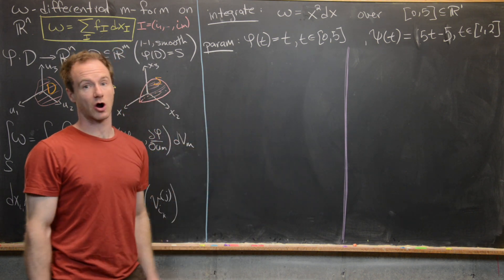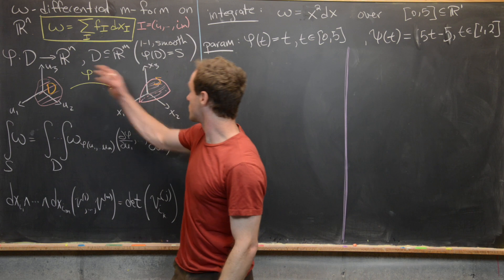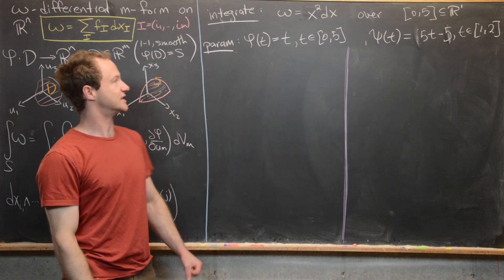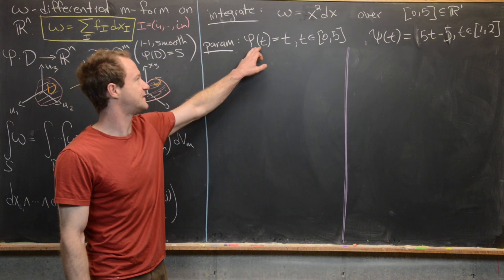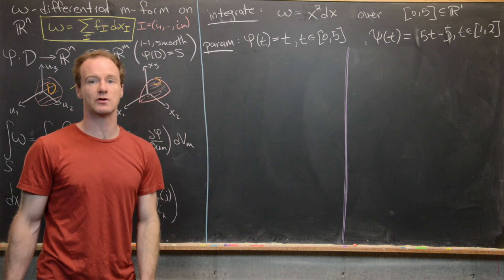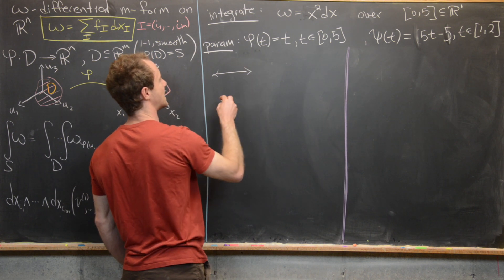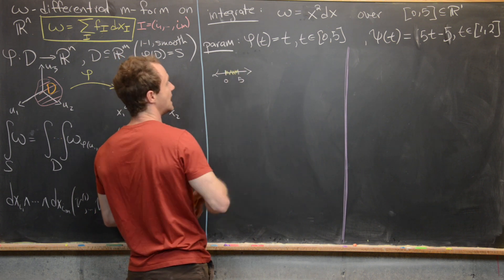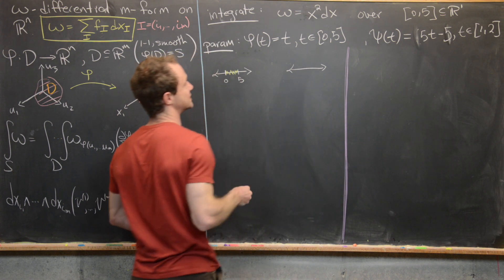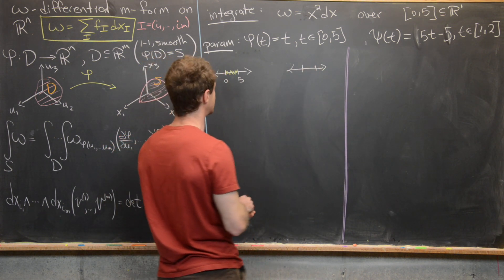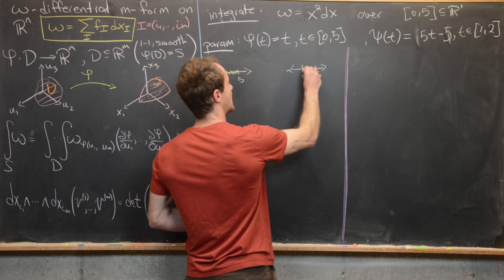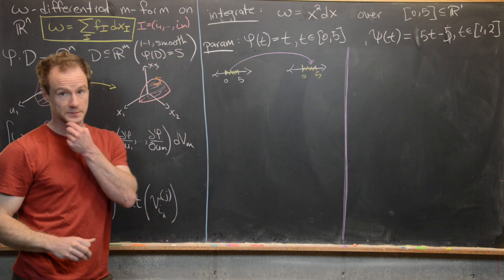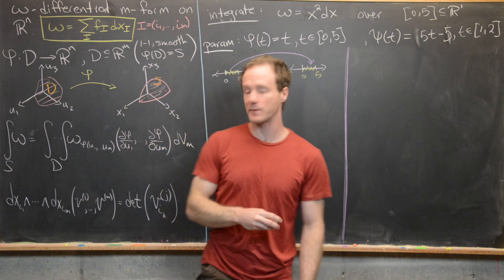We should get the same answer regardless of the parametrization, because what's important is that the m-form is being integrated over the surface S — we get to pick the parametrization. Let's first look at the trivial parametrization: phi of t equals t, where t runs from 0 to 5. So we have this domain interval [0,5] being mapped trivially to the same interval [0,5] in the codomain.